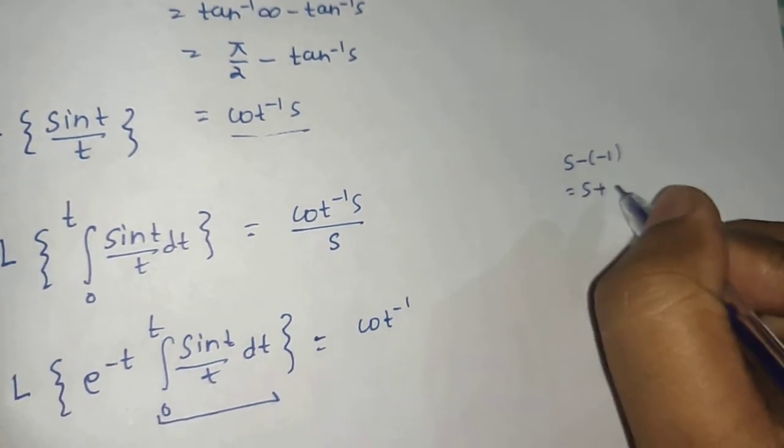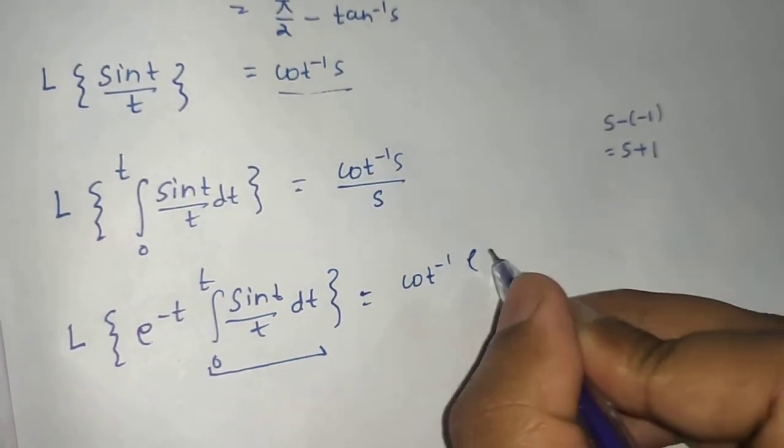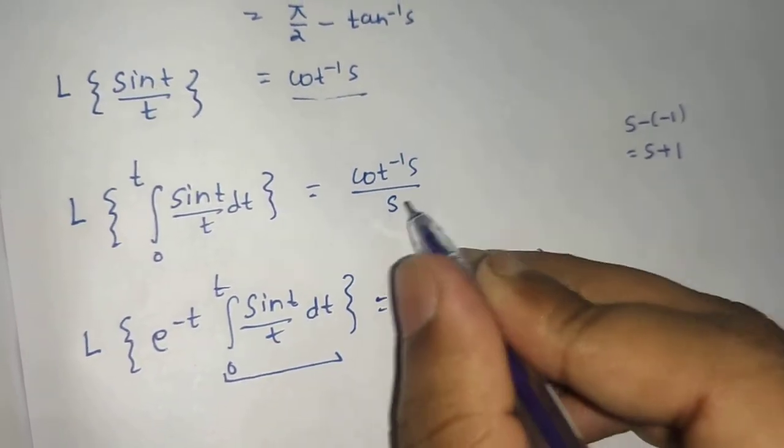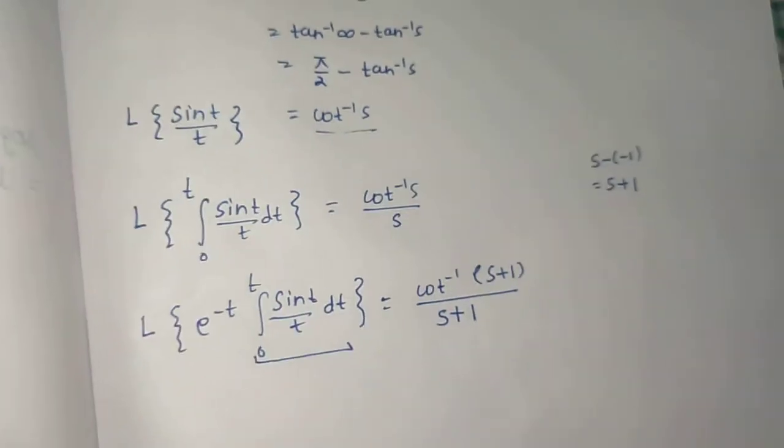So we will replace s by s + 1. So cot⁻¹(s + 1) divided by, again replace this s also by s + 1. Done.